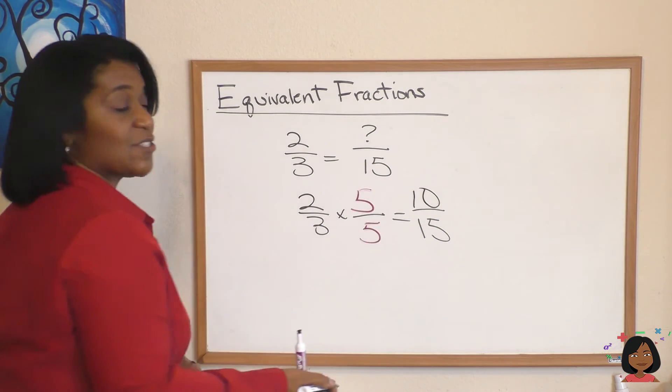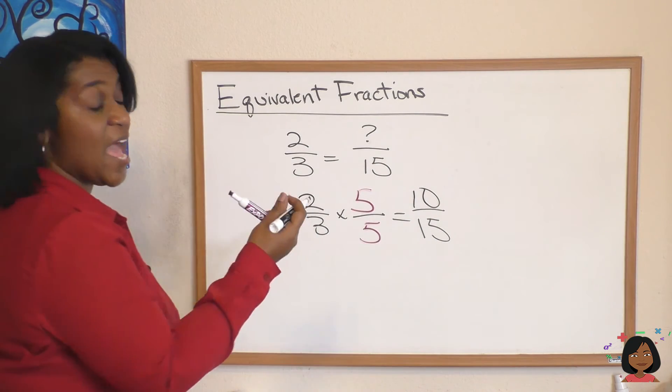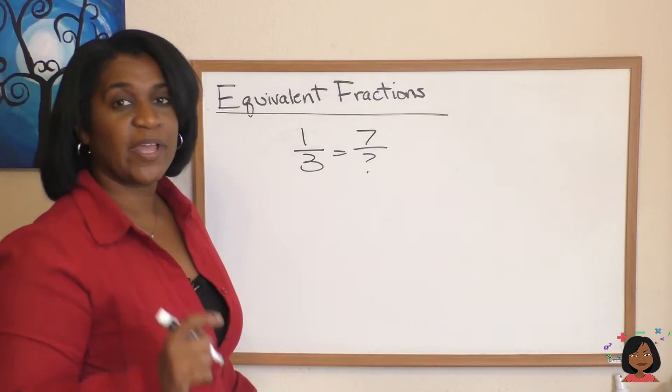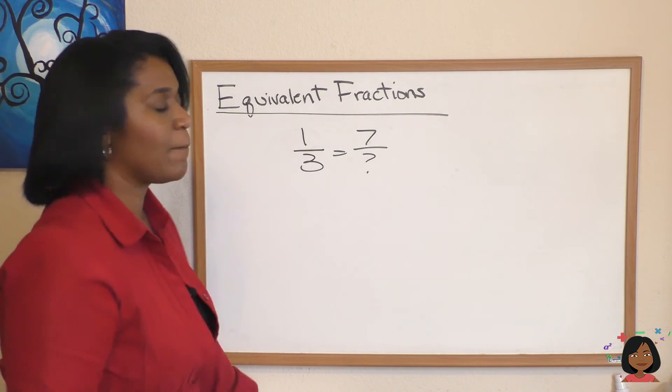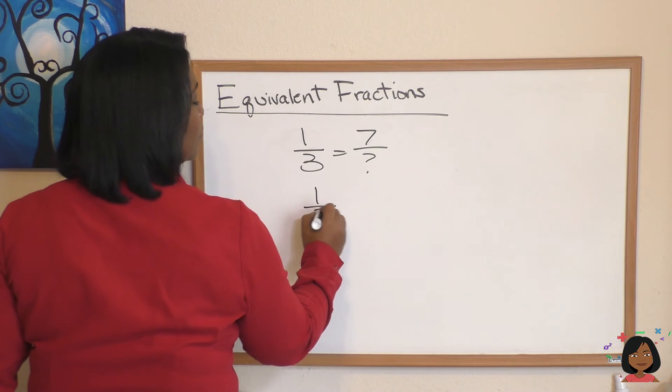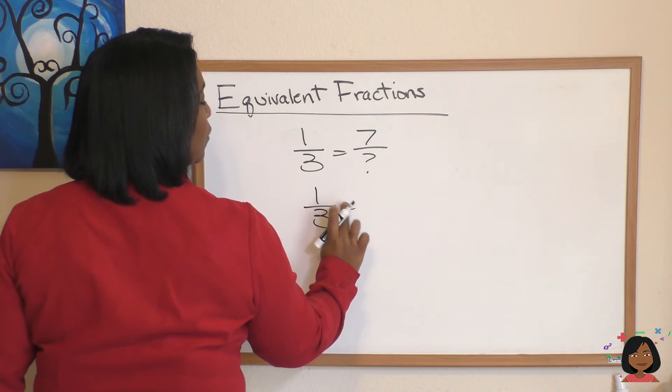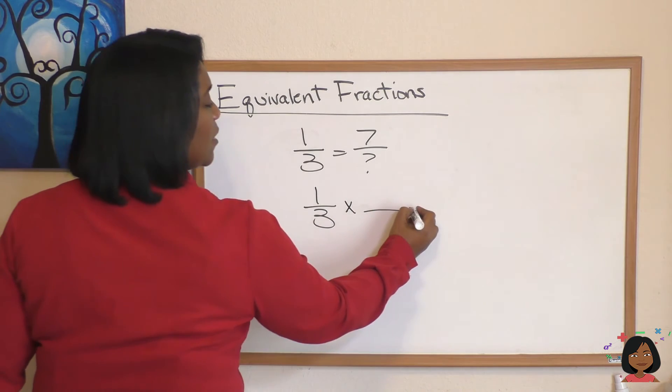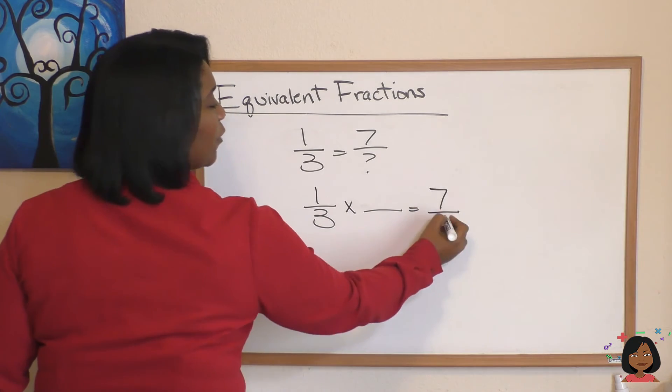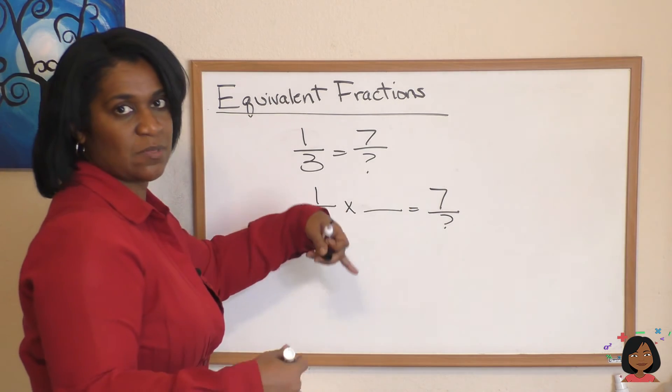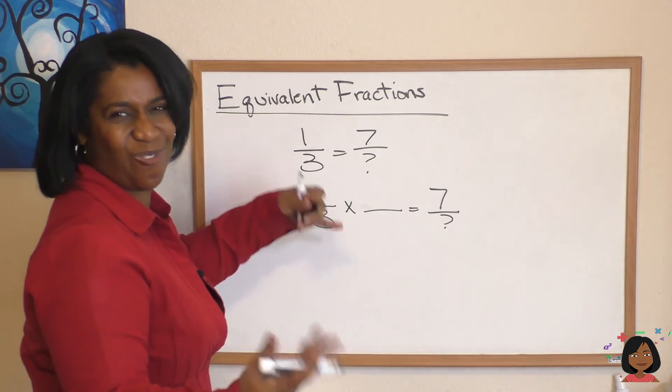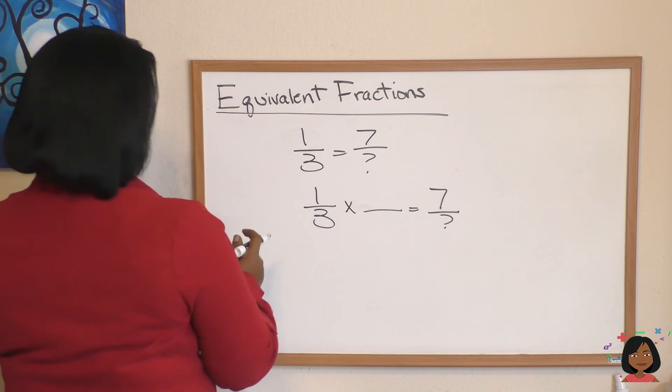So our equivalent fraction is 10 over 15. Here we have one-third equals seven over what number. Well, if we write it out, one-third times some fraction is going to give me seven over some number. Well, what times one is going to give me seven? Ah, that's going to be the number seven.